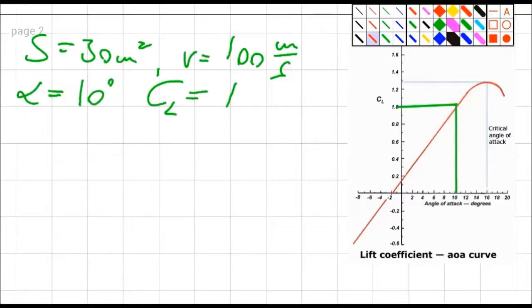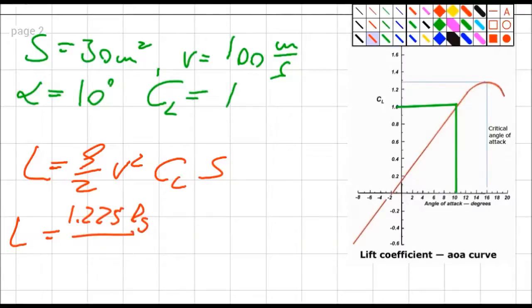I have everything I need. I can calculate my lift as lift is ρ/2 v² C_L S or 1.225 kilogram over cubic meter divided by 2. How do I know this? The density of the air I can look up in a table which is called ISO table. We will deal with this one in P6. Now I multiply with v square.